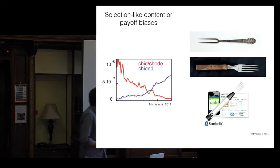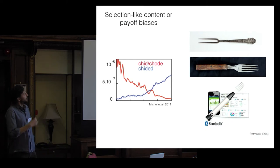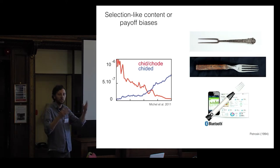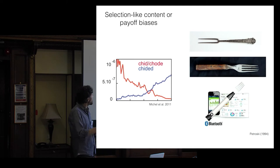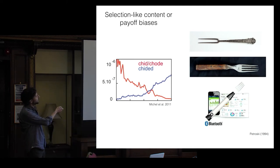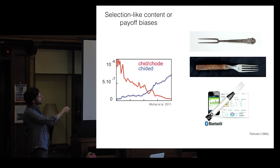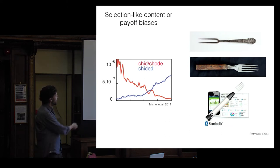There are quite selection-like content or payoff biases. In language, for example, some grammatical rules are just intrinsically more memorable or understandable. You can show that regular past tense forms like 'chided' — the past tense of 'to chide' — have been increasing in frequency from 1700 to the present day, while irregular forms like 'chid' or 'chod' have been decreasing, because the regular form is just easier to remember and so tends to spread.